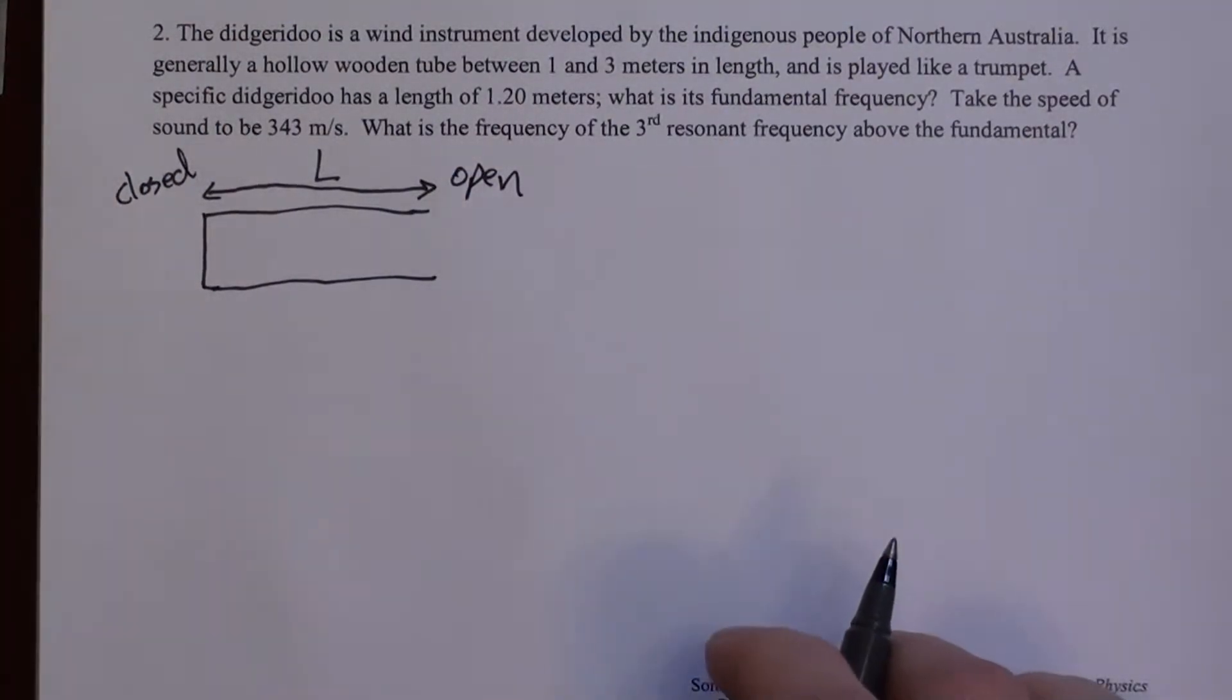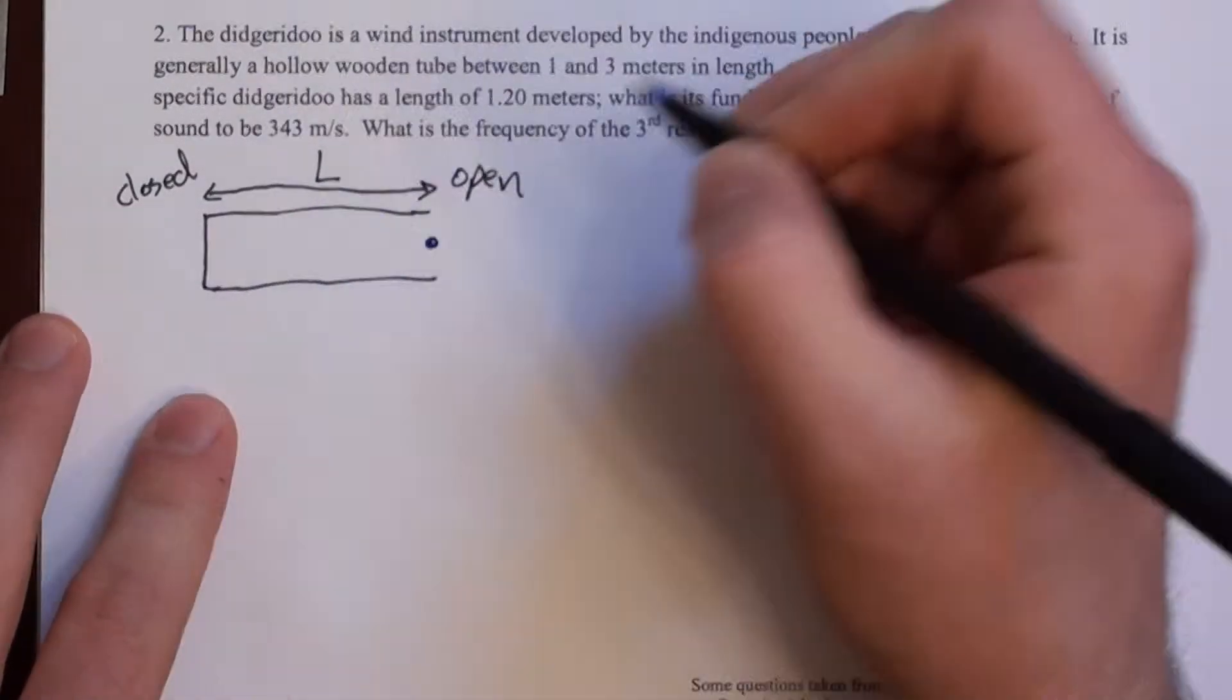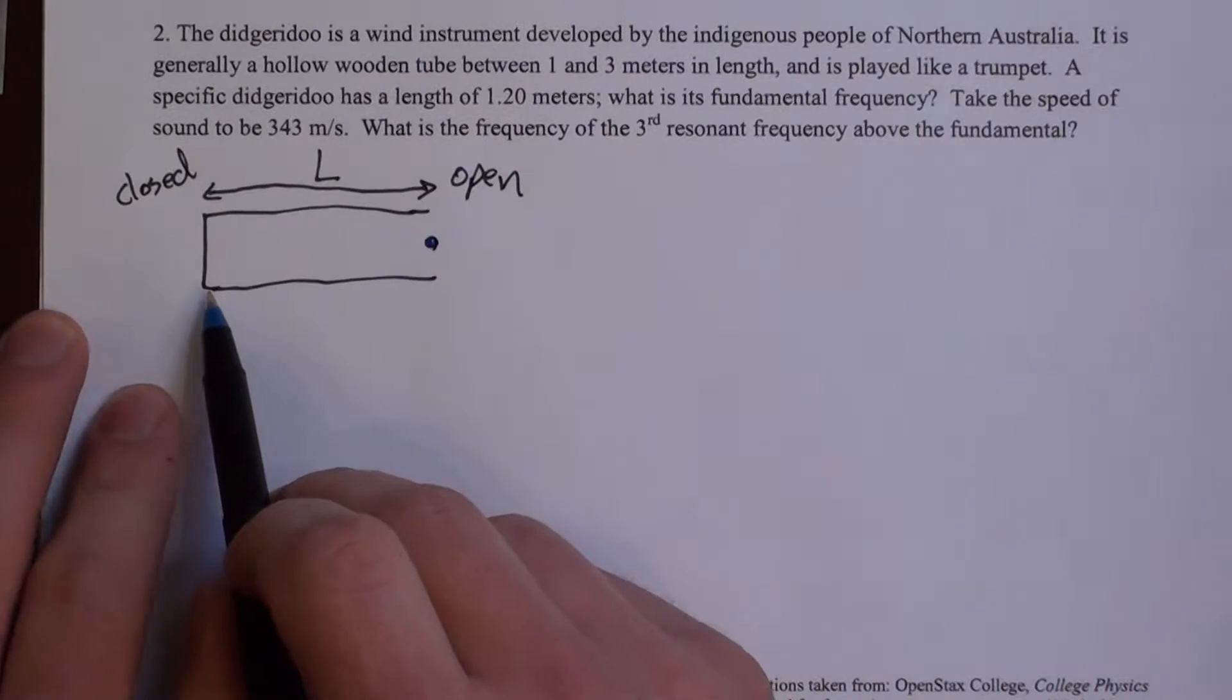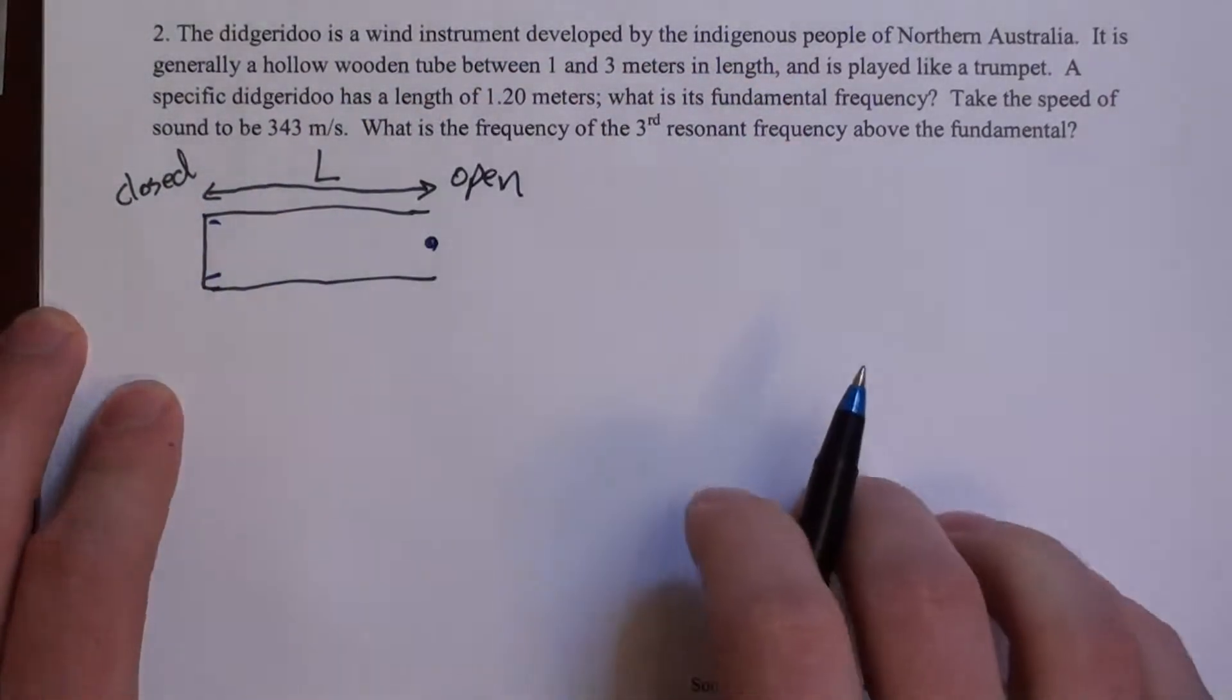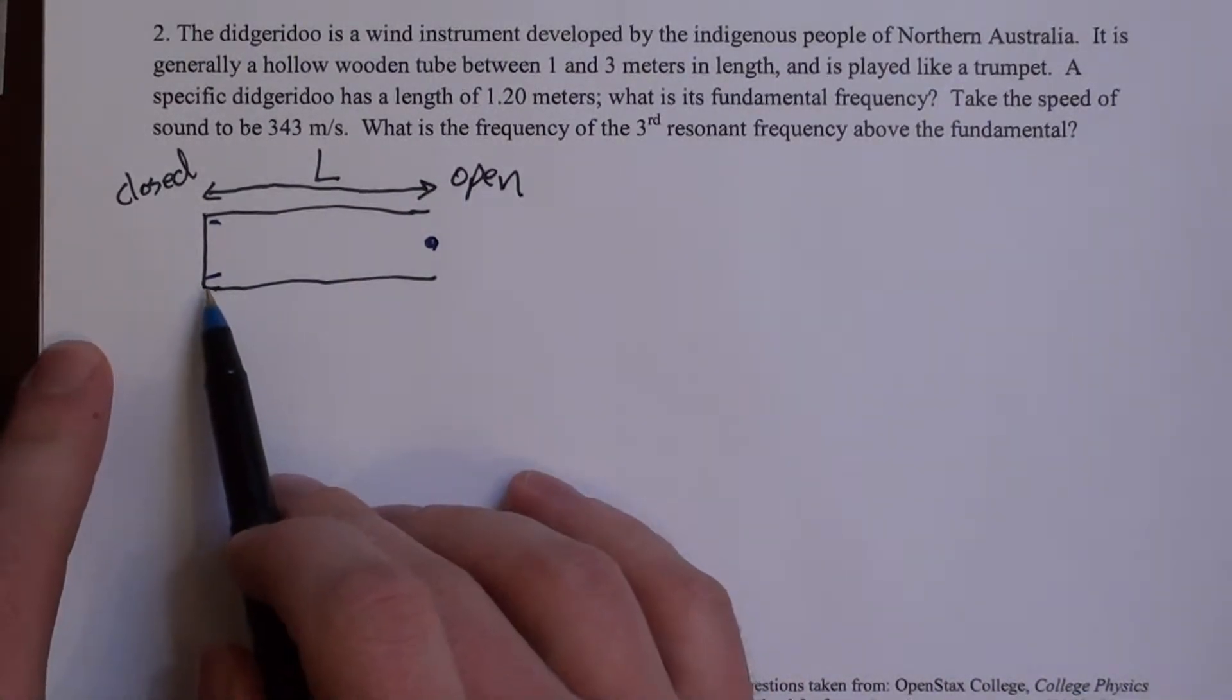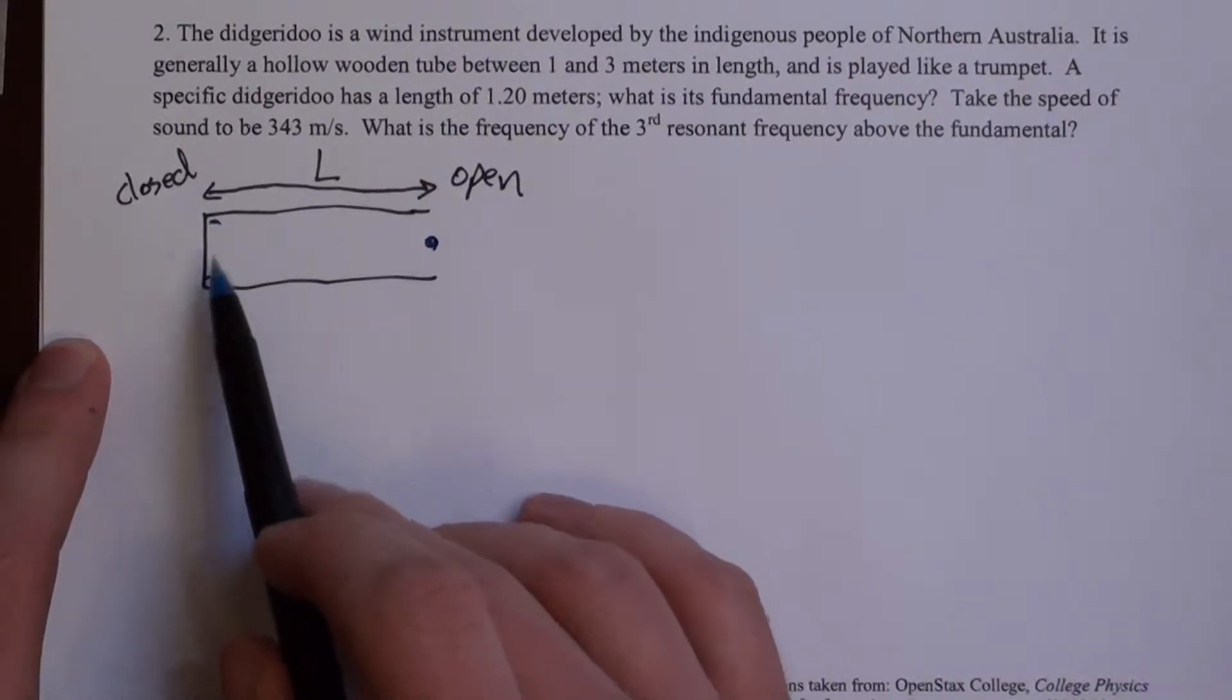This tube has a length L. We're told that a didgeridoo is played like a trumpet, which means that one end is open and the other end is closed, specifically closed by the mouth of the player. What that means is that the open end always acts like a node. Sound is a pressure wave, and the pressure at this opening will always be atmospheric. So this is a fixed pressure. The closed end, however, always acts like an anti-node. So we'll draw an anti-node here. In this case, the mouth of the player is causing high and low pressure alternatingly, and that's what causes this anti-node here.